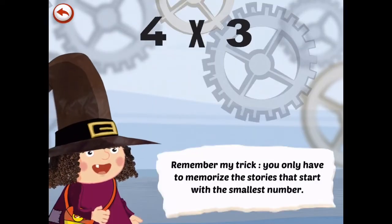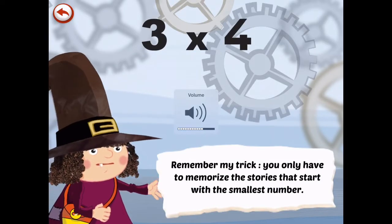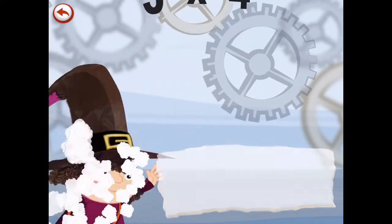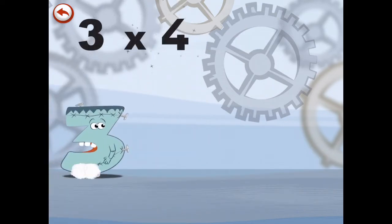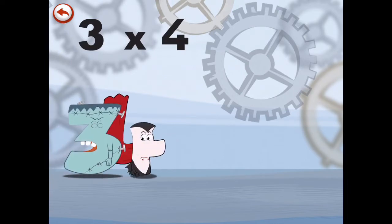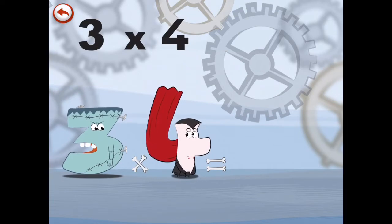Oh yeah, 4 times 5 is 20. Let's do 4 times 3. You only have to memorize the stories that start with the smallest number. So just start with the smallest number. What's the story of 3 times 4? Oh my gosh, it's a bolt statue meeting a vampire. And one day he does bite his head.